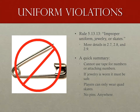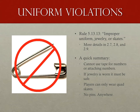As we start winding down, let's move into uniform violations. This is listed in rule 5.13.13 as 'improper uniform, jewelry, or skates.' For details, go to rules 2.7, 2.8, and 2.9. A quick list: safety pins and tape are not allowed when attaching numbers. Tape is allowed elsewhere as long as it's not dangerous, but cannot be used as numbers. Pins are never allowed anywhere. Jewelry must be safe. Skates must be quad skates, not inlines.